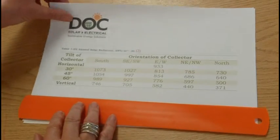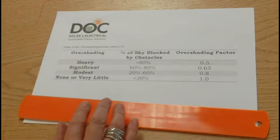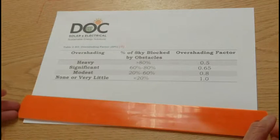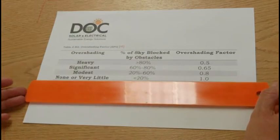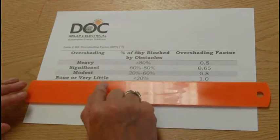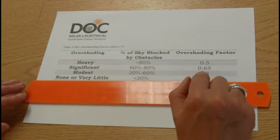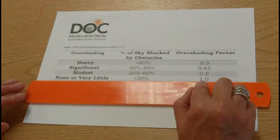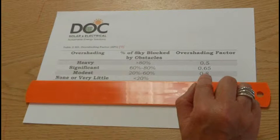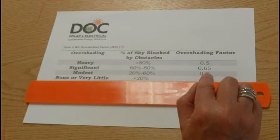Finally, number 4, the ZPV, is your overshading factor. Ideally, you want to place panels where there is none or very little shading. So where there's less than 20% shading, you'd apply an overshading factor of 1. Any calculation times by 1 remains the same.